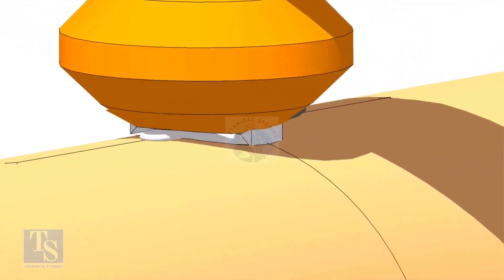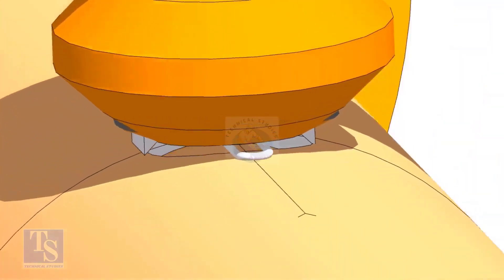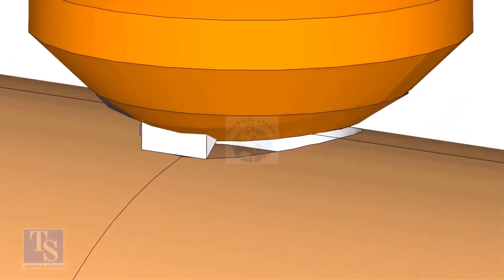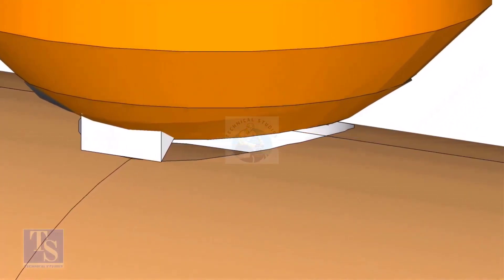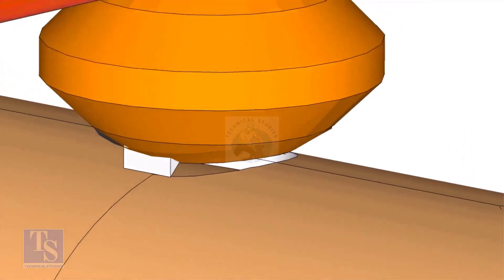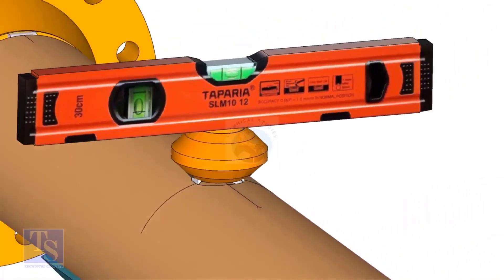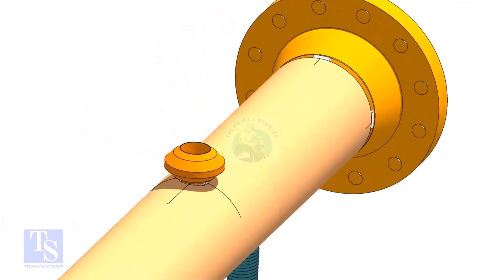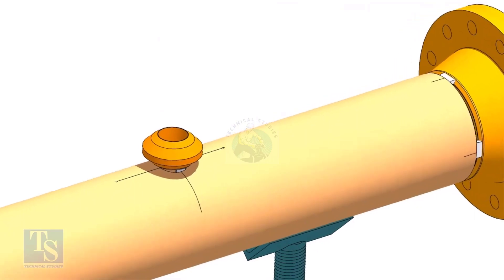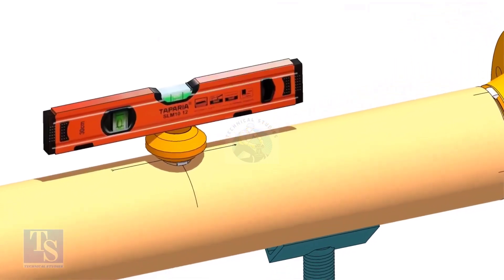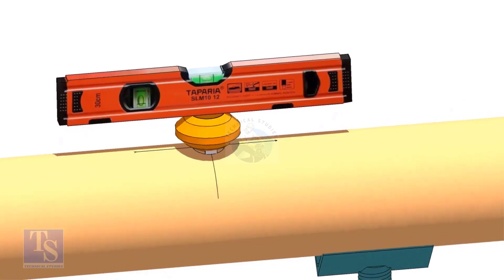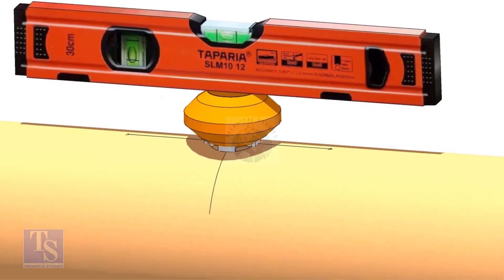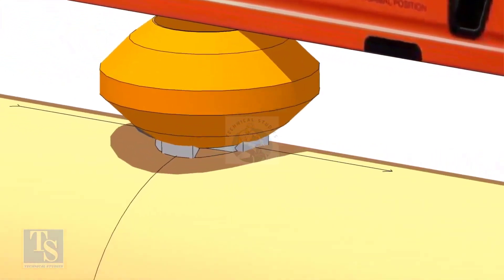Check the level again. If the level is correct on both ways, tack weld on the longitudinal side.